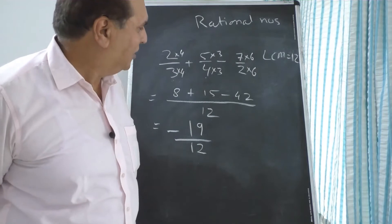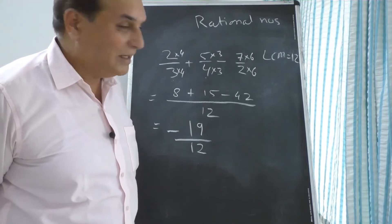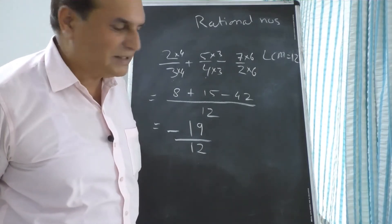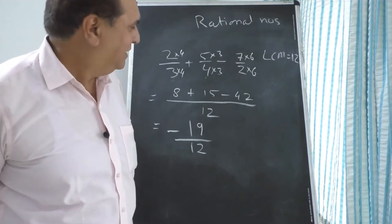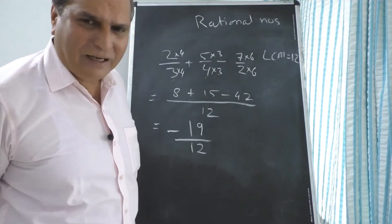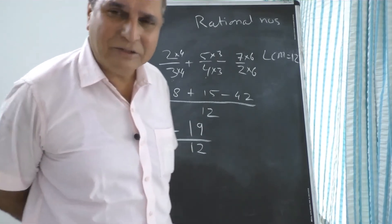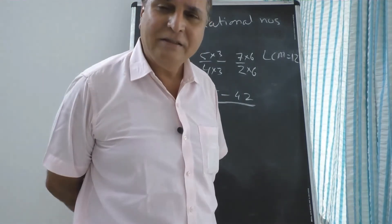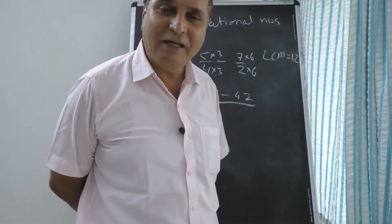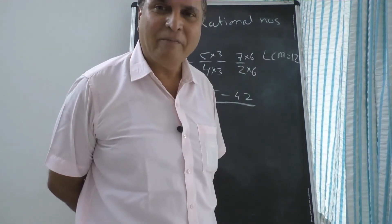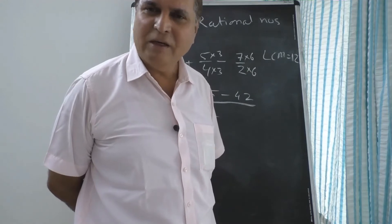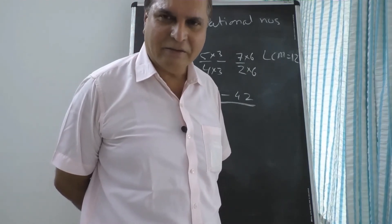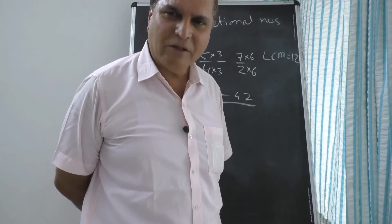This is how you do the sums — by equalizing the denominator, you can easily perform operations on rational numbers. If any sum is going wrong, you can ask me in the comment box and I will definitely reply. You can also call on the provided number or write in the comment box.